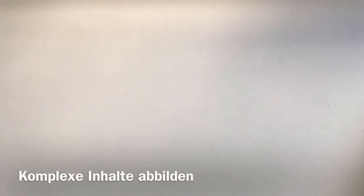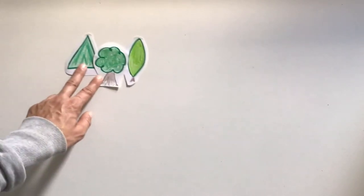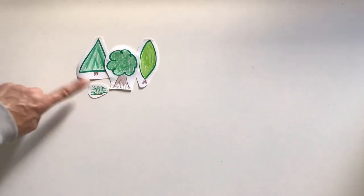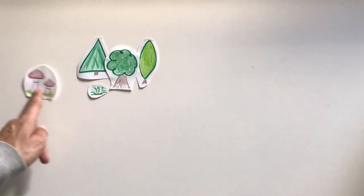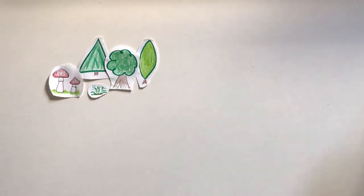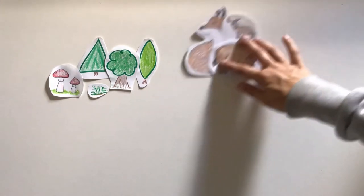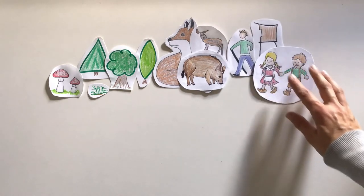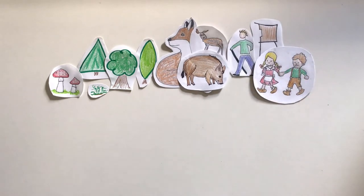Science tries to explain topics in all their complexity. For example, a forest consists of different types of trees, undergrowth, fungi, and a lot of different animals like deer, foxes, and wild boars. For many people forests are relaxing, for others it's a hunting territory, and again others get lost in forests.